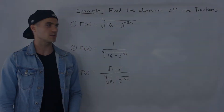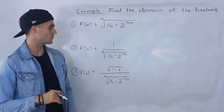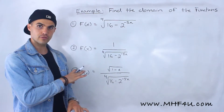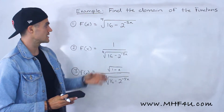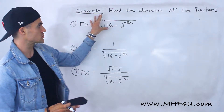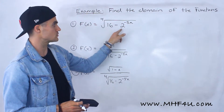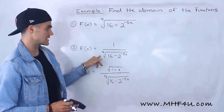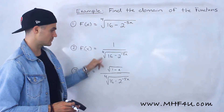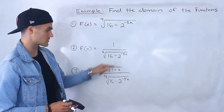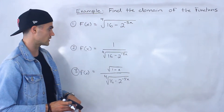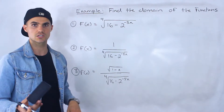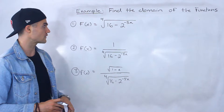What's up, everyone? Welcome back. Patrick here. In this video, we have to find the domain of these three functions. Notice that all three of these functions contain this expression — the fourth root of 16 minus 2 to the power of negative 5x. But in one function it's in the denominator, and in another we have the square root of 1 minus x in the numerator. It's actually going to change the domain for all the functions.